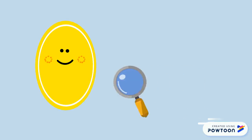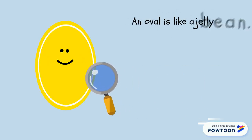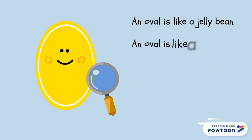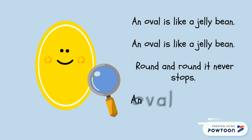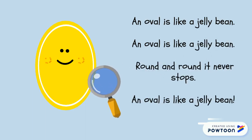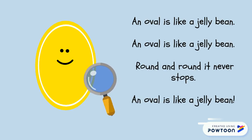Here we have another poem. Let's recite it together. An oval is like a jellybean. Round and round and never stops. An oval is like a jellybean.